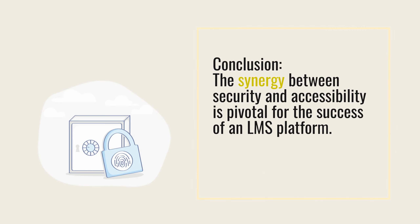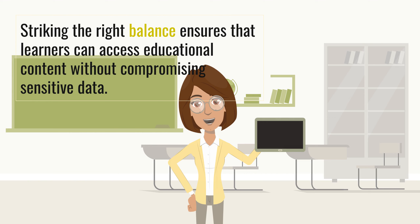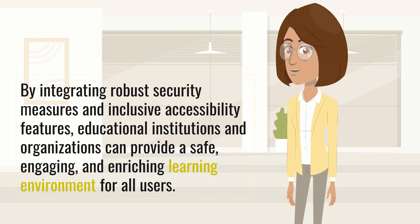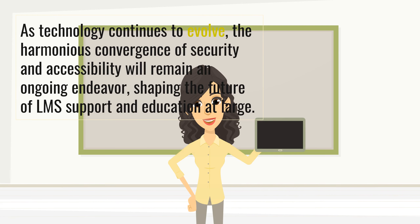Conclusion. The synergy between security and accessibility is pivotal for the success of an LMS platform. Striking the right balance ensures that learners can access educational content without compromising sensitive data. By integrating robust security measures and inclusive accessibility features, educational institutions and organizations can provide a safe, engaging, and enriching learning environment for all users. As technology continues to evolve, the harmonious convergence of security and accessibility will remain an ongoing endeavor, shaping the future of LMS support and education at large.